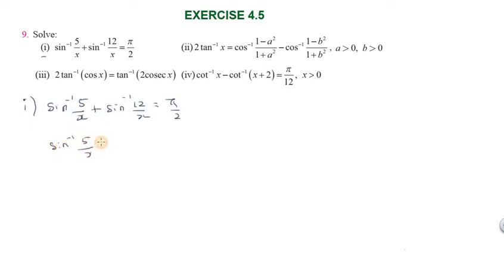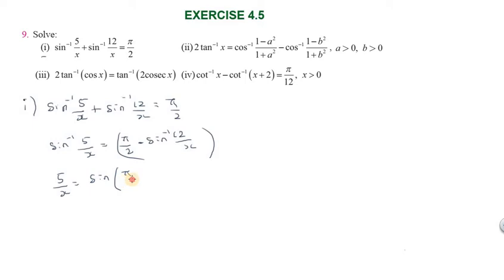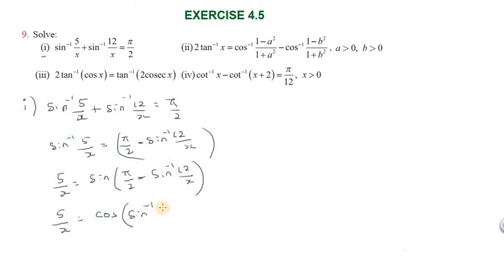Taking sin on both sides: 5/x = sin(π/2 - sin⁻¹(12/x)). Using the identity sin(90° - θ) = cosθ, we get 5/x = cos(sin⁻¹(12/x)). Now we convert sin⁻¹ in terms of cos.